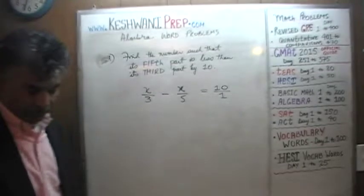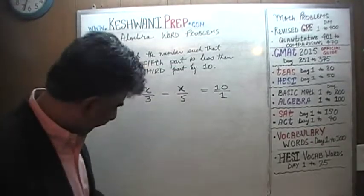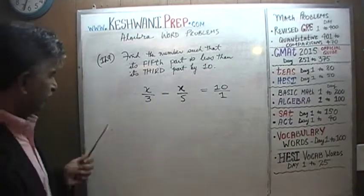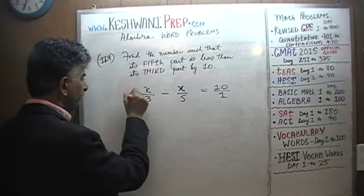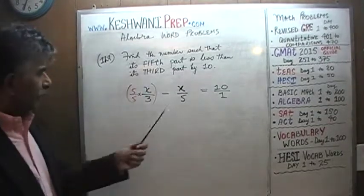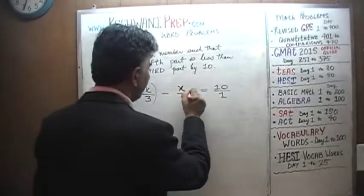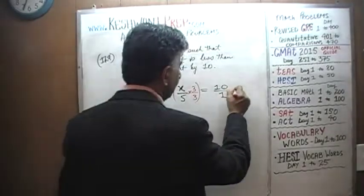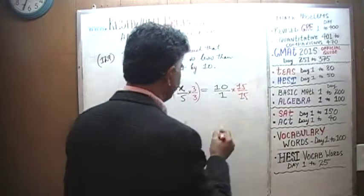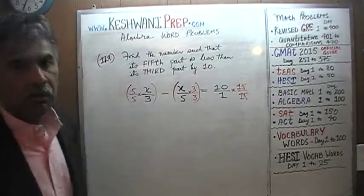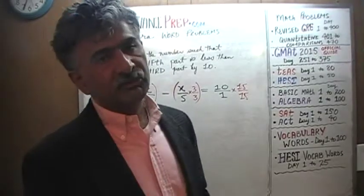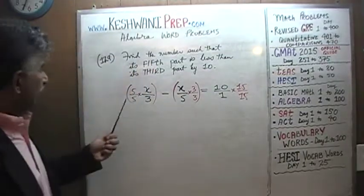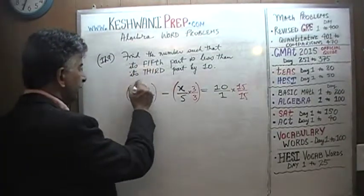The common denominator here would be 15 — that's 3 times 5. We have a denominator of 3 in the first term; to make it 15, multiply by 5 over 5. We have a denominator of 5 in the second term; multiply by 3 over 3. And for the constant term with denominator 1, multiply top and bottom by 15. Now everything has a denominator of 15, so we can simply ignore it.